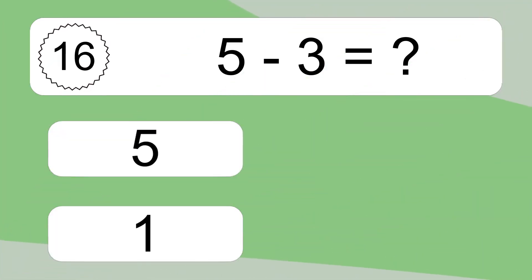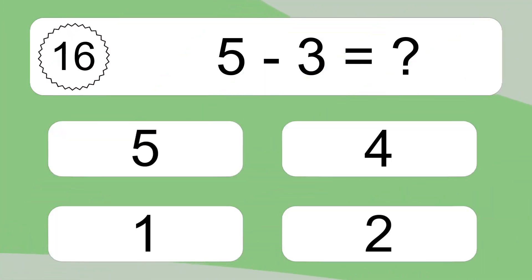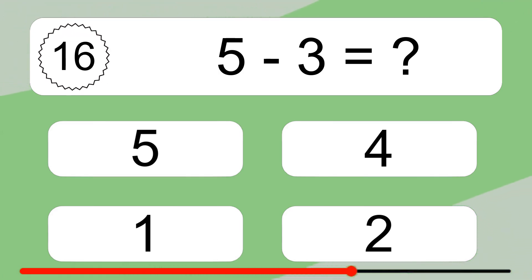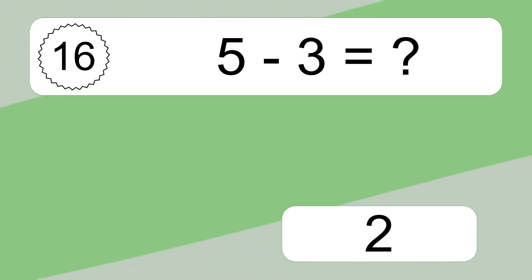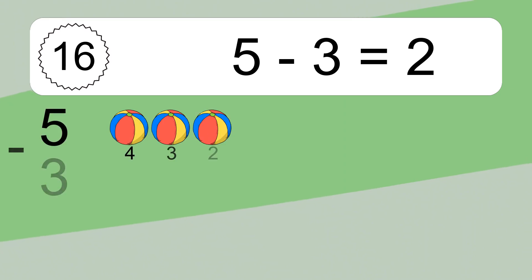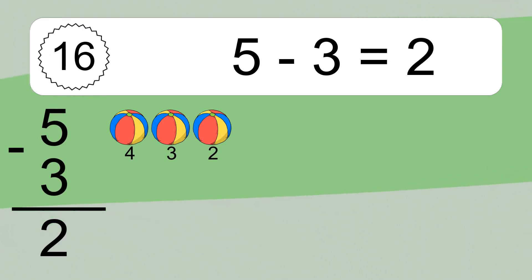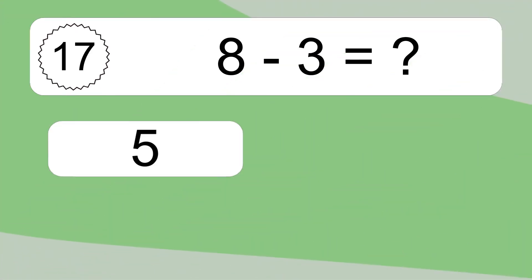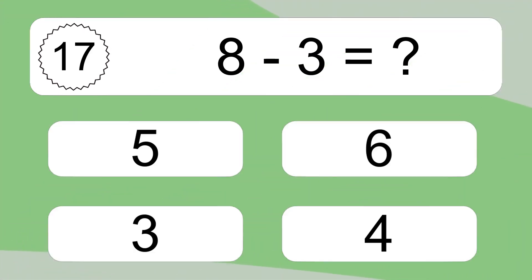5 minus 3 equals what? 5 minus 3 equals 2. Let's count it: 4, 3, 2.